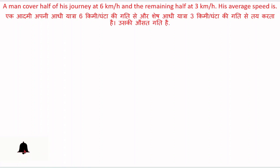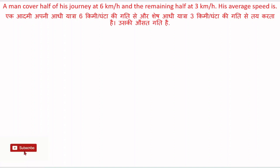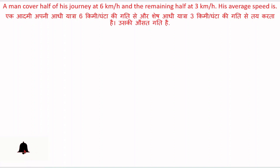A man covers half of his journey at 6 km per hour and the remaining half at 3 km per hour. His average speed is? एक आदमी अपनी आधी यात्रा 6 km प्रति घंटा की गति से और आधी यात्रा 3 km प्रति घंटा की गति से तय करता है, तो उसकी औसत गति क्या होगी? वो निकालना है — average speed क्या होगा?